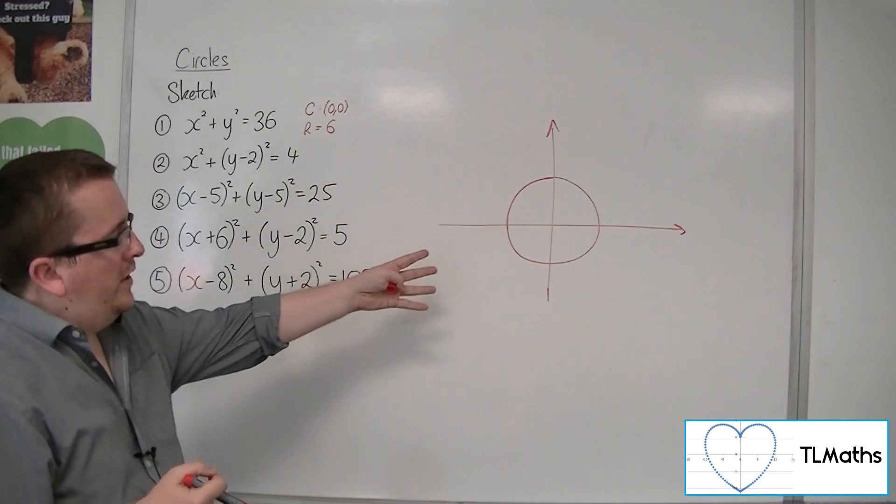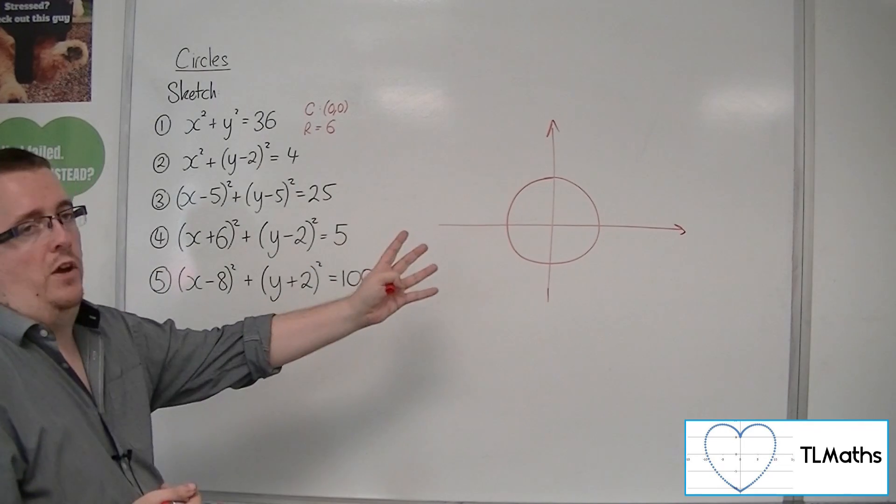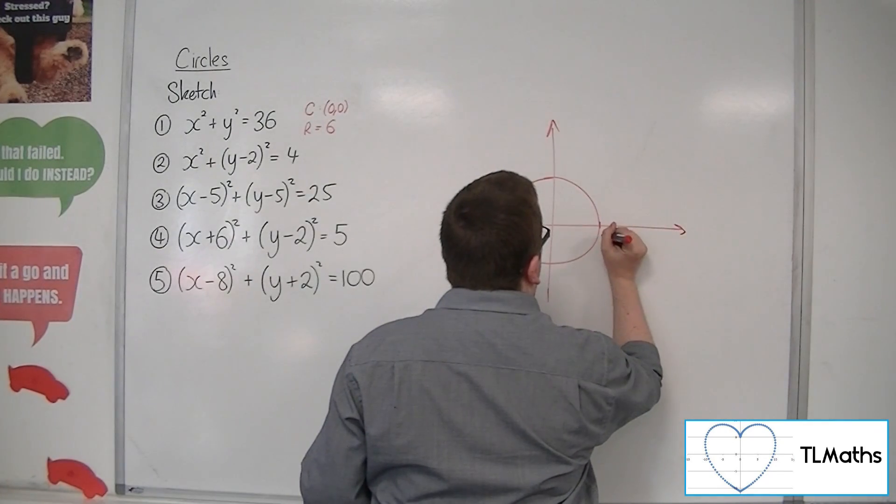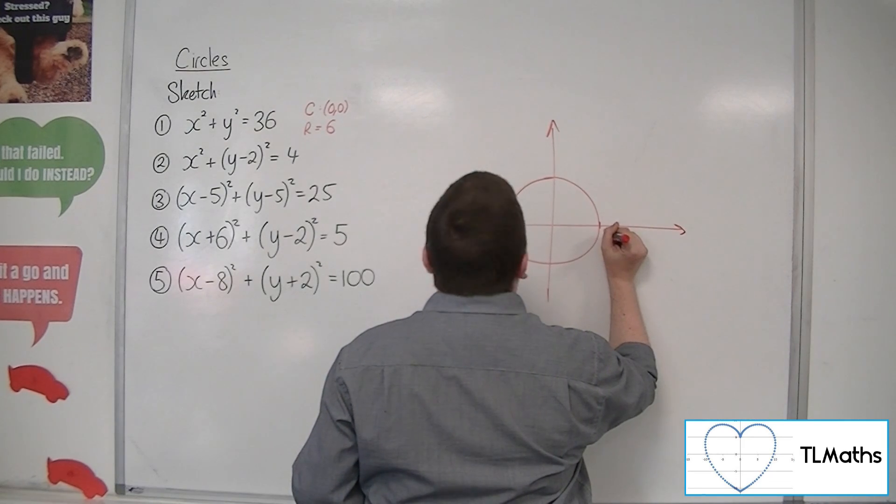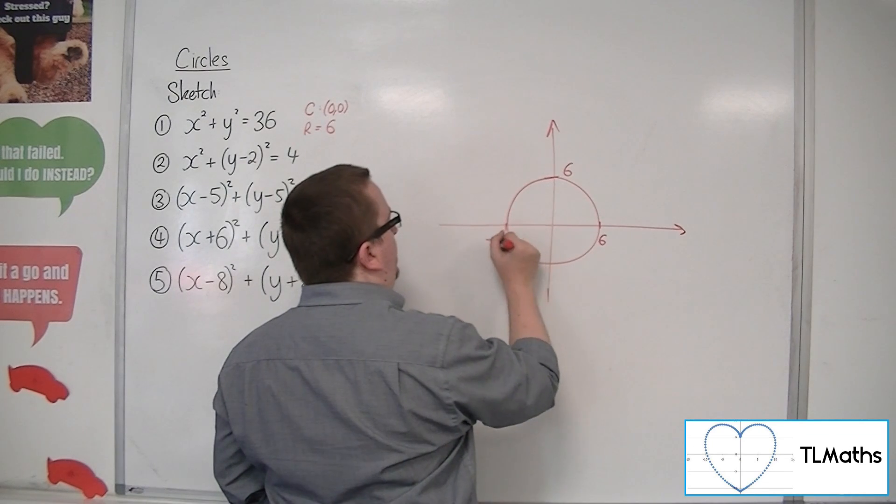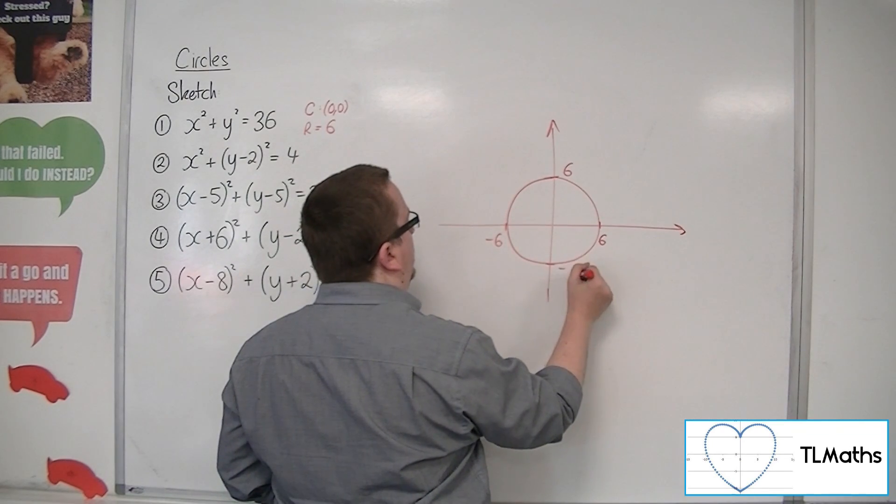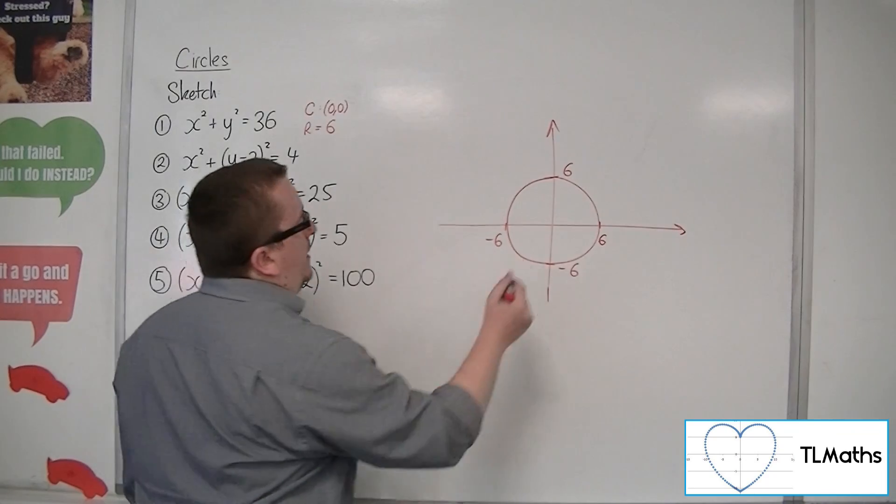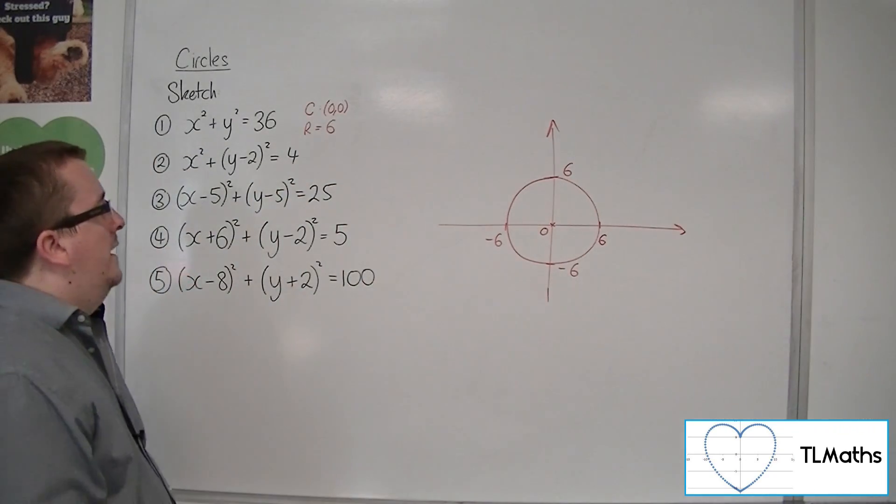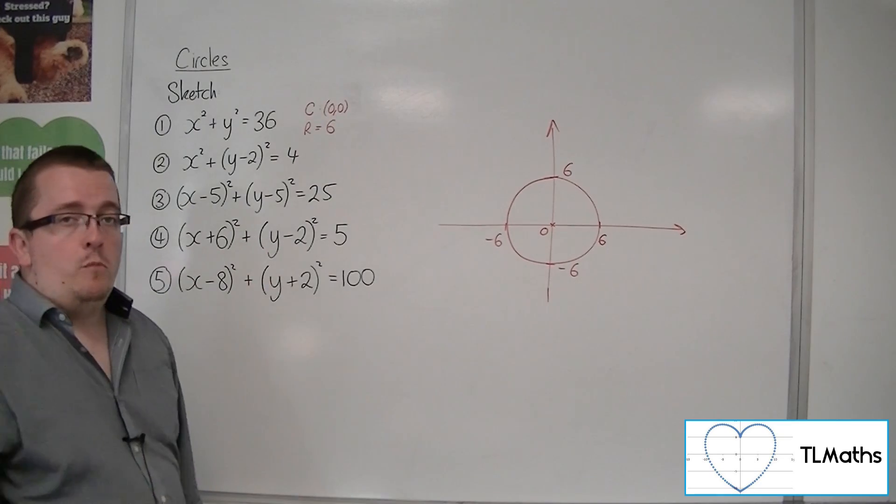So look, the circle there isn't too bad, but it's not perfect, but that'll do. People would recognise it as a circle. So, as it's got radius 6, it must be going through 6 on the x-axis, 6 on the y-axis, minus 6 on the x-axis, and minus 6 on the y-axis. Centred at the origin. And that's a sketch of number 1.